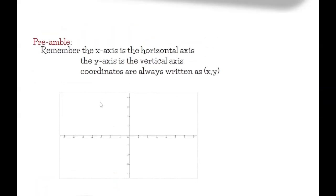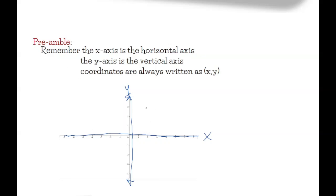Before we get going, I want to remind everyone that we have an x-axis and a y-axis. The x-axis goes along here horizontally, and we have our y-axis in the vertical position. We always write coordinates as (x, y), so we go side to side first, then up or down. For instance, if we have a spot right here and we want to know the coordinates, we go in the x direction positive 2, and then the y is up 3 in the positive — so (2, 3).